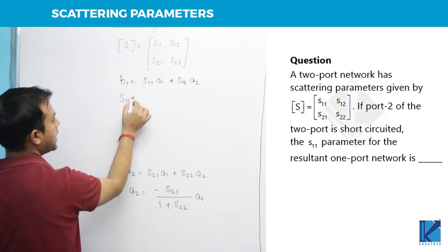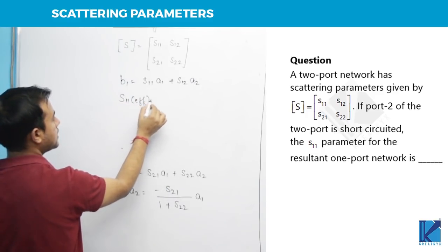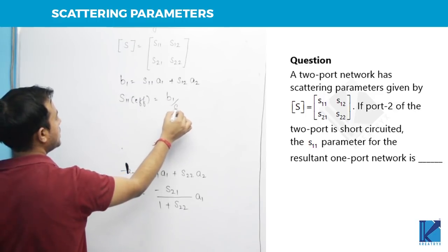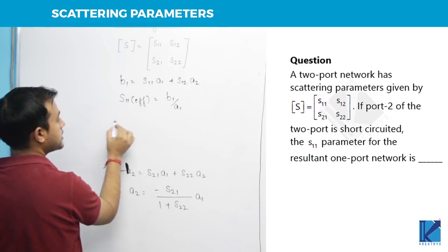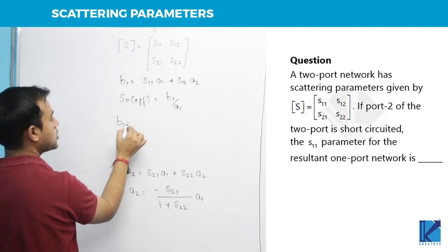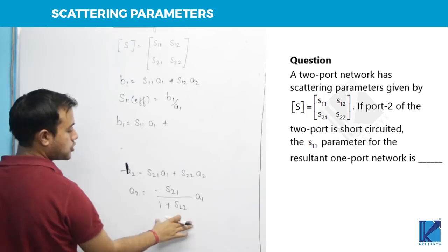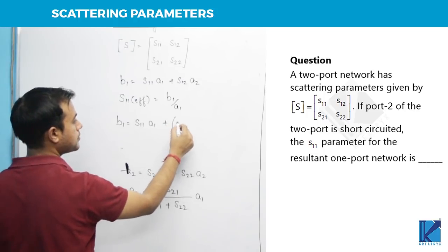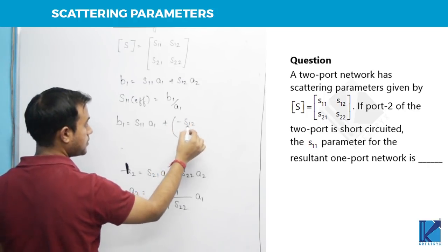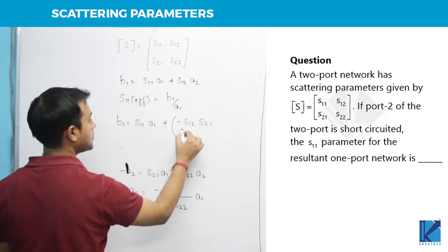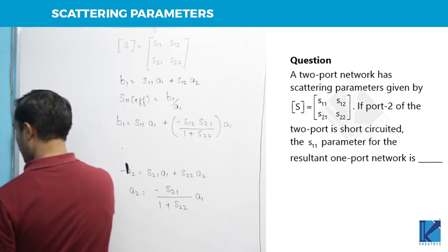Now if you want to find out S11 effective, it will be B1 upon A1. Now if we substitute the value of A2 in terms of A1, we will substitute this value: negative S12 S21 by 1 plus S22, A1.